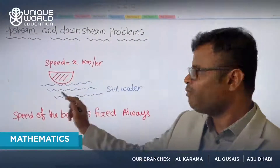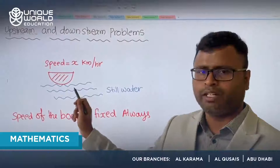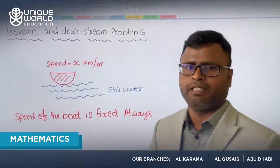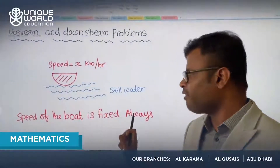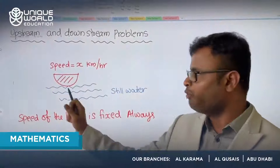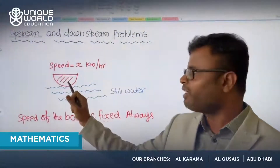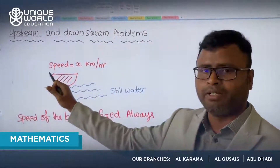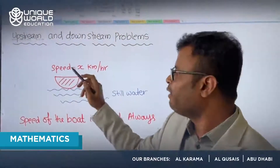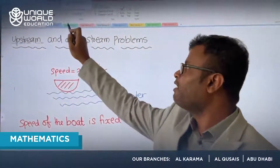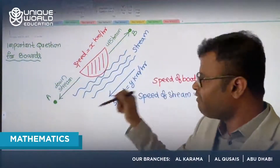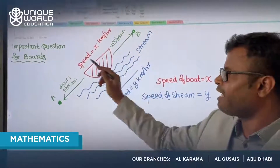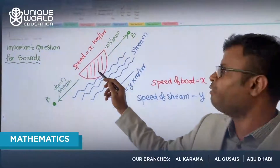Consider still water — there is a boat, and let's assume the speed of the boat is x km/h. The speed of the boat is always fixed here because the water is not moving; whether the boat goes right or left, the speed remains x km/h. Now we change the situation slightly: there is a stream of water flowing downward, and the same boat can move either downstream or upstream.